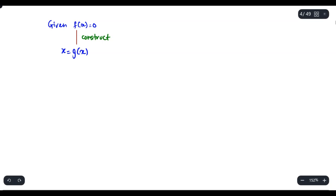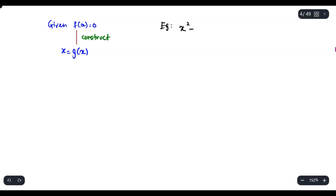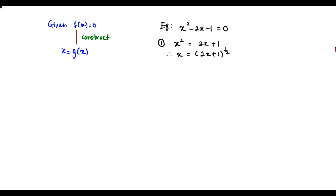For example, assume that your f(x) is x squared minus 2x minus 1 equal to 0. If we take x squared to be on the left hand side, then you have 2x plus 1. So if you want to have only x at the left hand side, at the right hand side you will have the square root of 2x plus 1. So now you already have an expression in the form of x equals g(x).